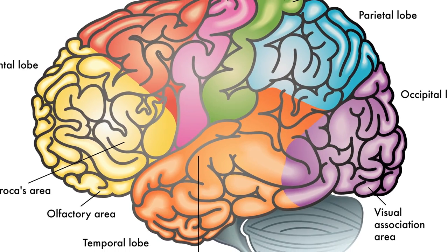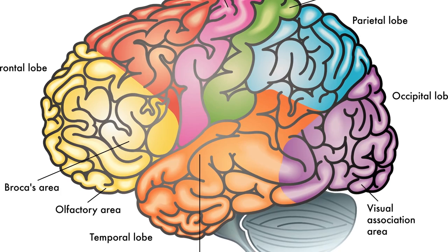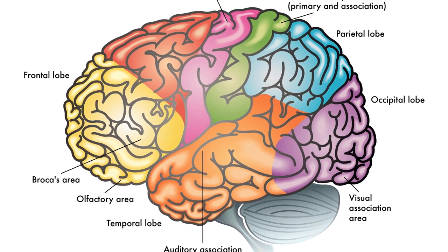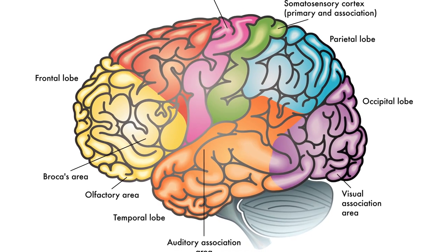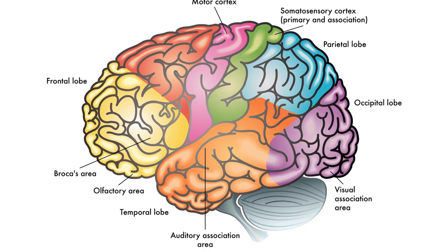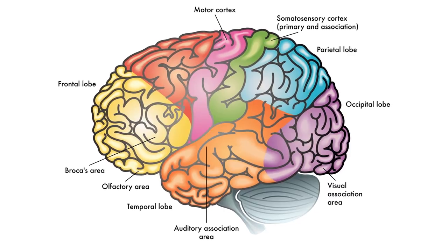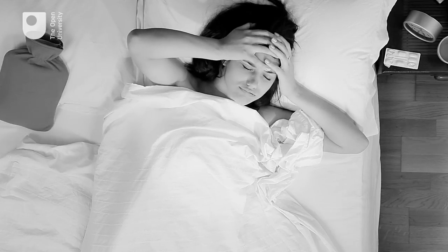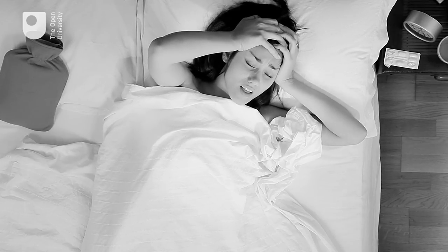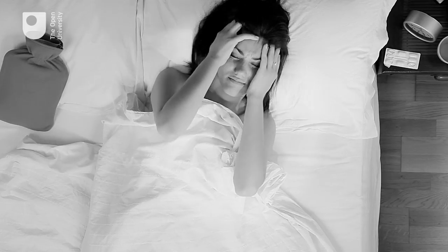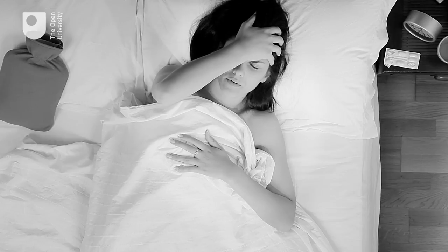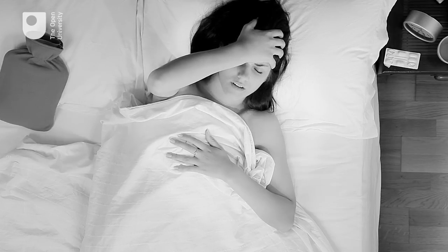Alcohol does this by dampening down activity in an area of the brain called the prefrontal cortex. In psychology this area is thought of as our central executive — the seat of our logical, reasoned, rational behaviour. By dampening down activity in this area, alcohol is effectively gagging this voice of reason. So if you've ever woken up after a night out feeling embarrassed by something silly you said or done, you can thank alcohol for its effects on the prefrontal cortex.